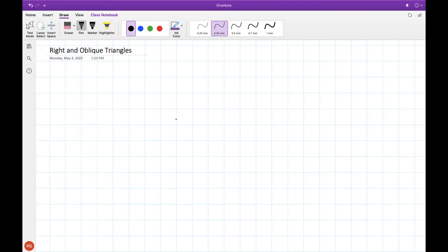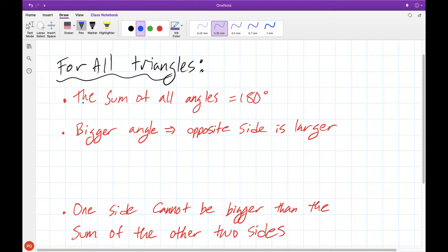Before we start I want to go over a couple of key rules and features that all triangles have. The first rule here is that the sum of all angles needs to be equal to 180 degrees. That's just the definition for triangles.